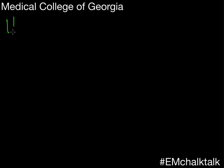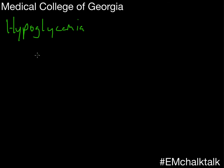A couple of points about hypoglycemia in kids. First of all, especially if it's a very young child who doesn't have an underlying problem like diabetes, you need to find out why they've got hypoglycemia. So if you can — and generally you can — before you give sugar to that child, at least get a couple of blood samples.